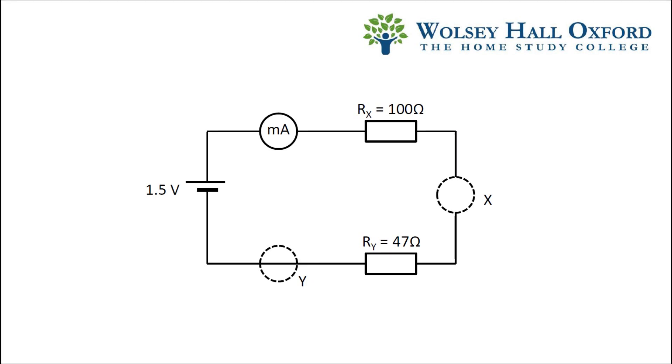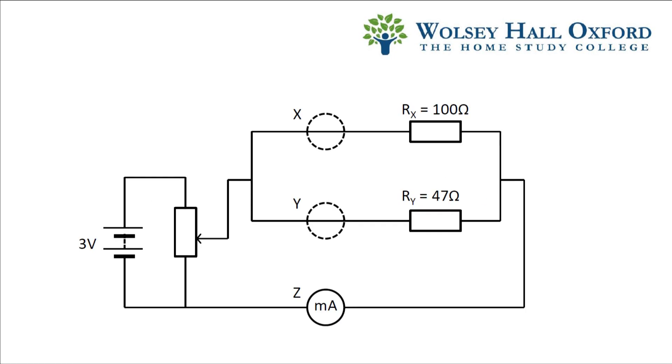In the first electricity video, a 100 ohm resistor and a 47 ohm resistor were put in series. We saw that the current reading was the same irrespective of where you placed the ammeter. Here we're using the same resistors but placing them in parallel.